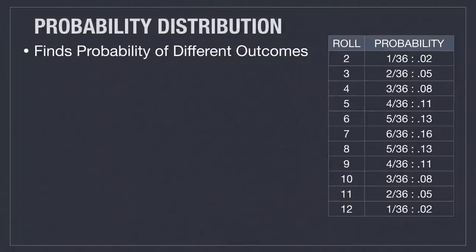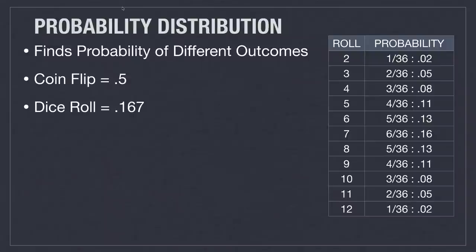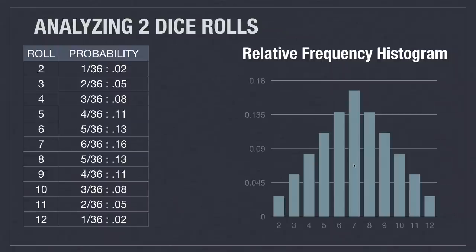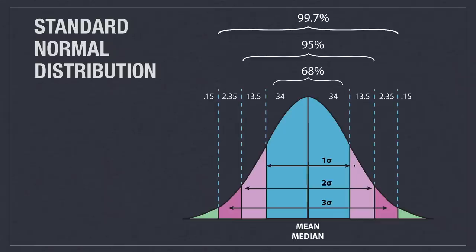And that brings us to the probability distribution, which finds the probability of different outcomes. A coin flip has a probability distribution of 0.5 — you can only get either a head or a tail, 50%. A single die roll has a probability distribution of 1/6 or 0.167. It's very important to remember that the sum of all possible probabilities is always going to equal one. You can also see the probability distribution when rolling two dice. A relative frequency histogram charts out all these different probabilities — pay particular attention to the shape of the chart, because next we'll talk about the normal distribution.